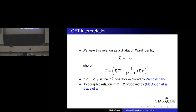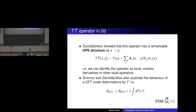This interpretation was proposed by the Princeton group — McGough et al. — and very much pushed forward by Per Kraus and his collaborators. The idea is to take seriously that what is going on at finite radius is that one really has a conformal field theory deformed by this operator. Zamolodchikov emphasized that this operator has a remarkable OPE structure — the operator can be identified as local modulo derivatives of other local operators, using special features of being in two dimensions. You don't need conformal symmetry; you really just use basic features of translational invariance.